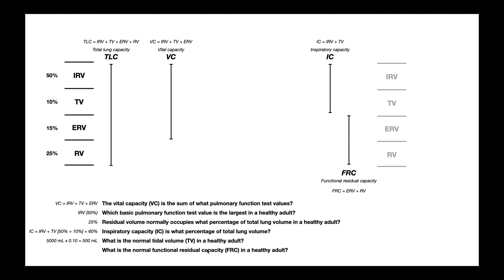For the last question: what is the normal functional residual capacity, or FRC, in a healthy adult? FRC equals ERV plus RV. The expiratory reserve volume is 15% and the residual volume is 25%, so FRC is 15% plus 25% — which is 40% of total lung volume. We then multiply 5,000 milliliters by 0.40 and get 2,000 milliliters. So the normal functional residual capacity is 2,000 milliliters.